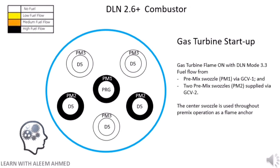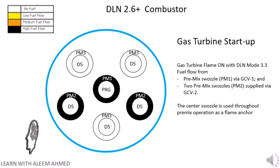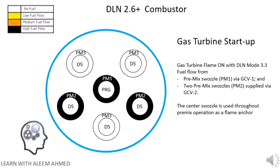Now let's discuss the startup modes of the 7FA gas-fired gas turbine and the different DLN mode changeovers from initial firing to base load. After necessary start checks completion, the machine will go to cranking speed, which is around 850 RPM for a 60 Hz grid. The gas turbine will perform the purging cycle and go for auto fuel gas leak tests. Once the purge timer is completed and fuel leak test is successfully completed, the machine RPM will coast down to firing speed and flame-on will occur with DLN mode 3.3. At this stage, fuel will flow from premix swazzle PM1 via GCV1 and two premix swazzles PM2 via GCV2. The center swazzle is used throughout premix operation as a flame anchor.